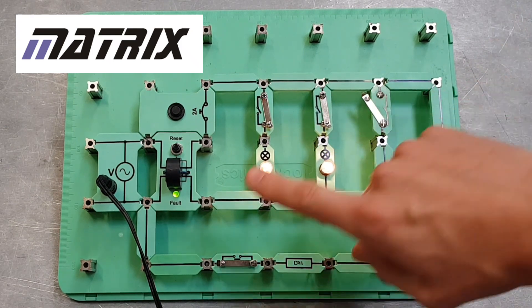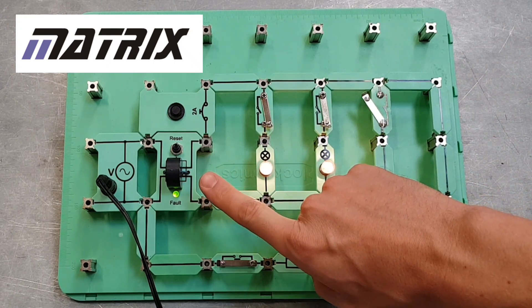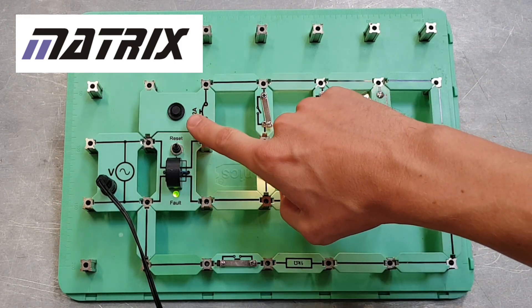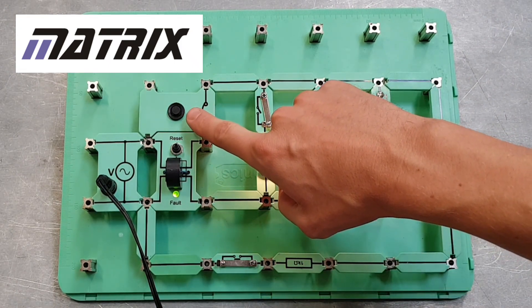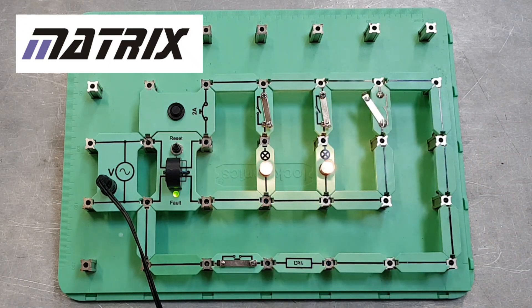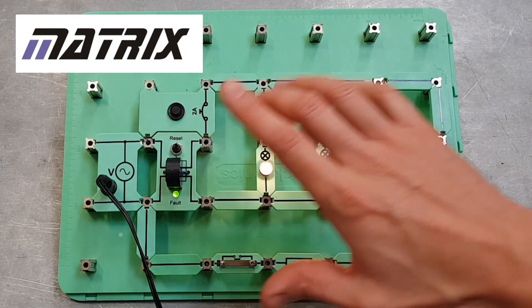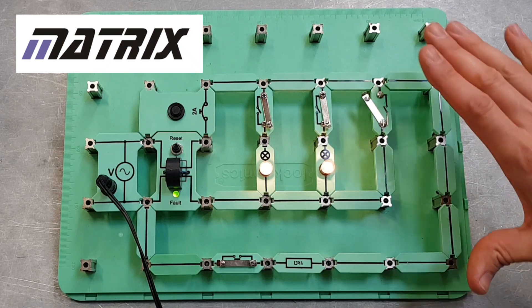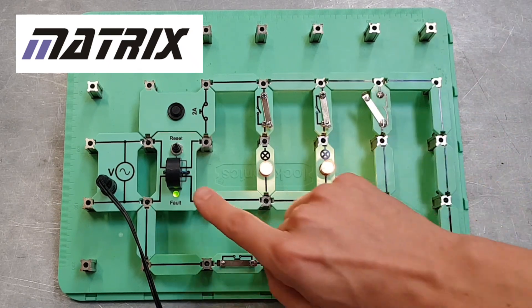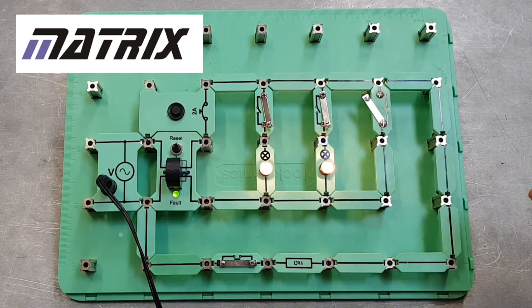Here we've got our little RCD unit, and over here we've got our overcurrent protection in the form of a resettable fuse. What's really good about this setup is it can simulate an earth fault showing how the RCD will operate, but it will also help us understand that you also have to have overcurrent protection in place as well.